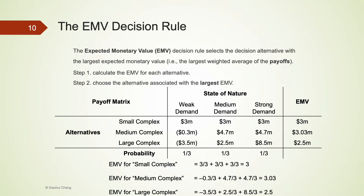The expected monetary value, or EMV rule, incorporates these probabilities and calculates the expected monetary value for each alternative. We first calculate the weighted average payoff for each alternative, and then choose the alternative with the highest EMV — that is, the alternative with the highest expected payoff. Using a one-third chance for each of the three states of nature, the company would have the highest expected payoff if it chooses to build a medium complex. The expected payoff is $3.03 million.